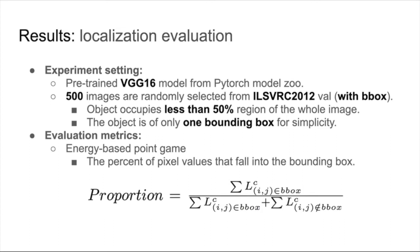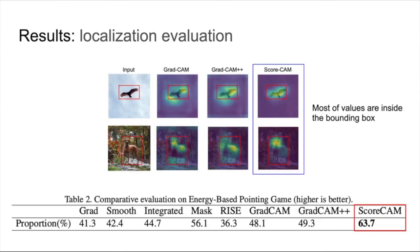For localization evaluation, we randomly select 500 images with two restrictions. The target object occupies less than 50% region of the whole image, and the target class is of only one bounding box for simplicity. We evaluate on energy-based point game metric, which measures how much energy falls into the bounding box. The energy here is the values in explanation map. We also achieve the best localization performance. Most of the highlighted values are inside the bounding box.